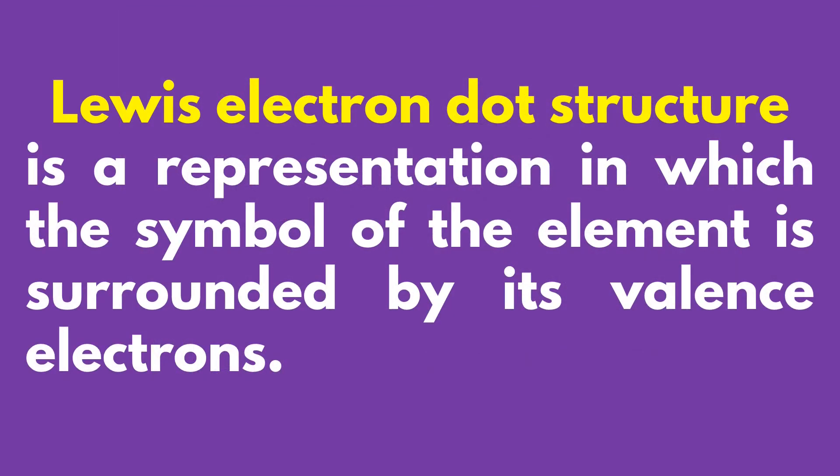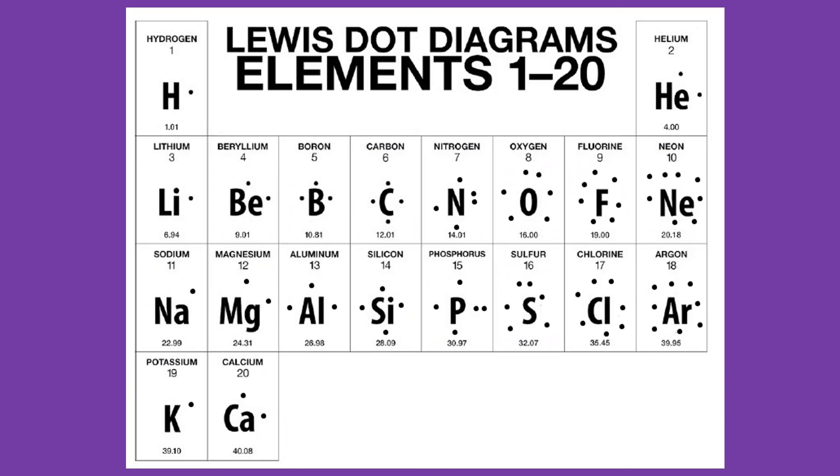Lewis electron dot structure, or LEDS, is a representation in which the symbol of the element is surrounded by its valence electrons. These are examples of some elements in the periodic table surrounded by their own valence electrons.